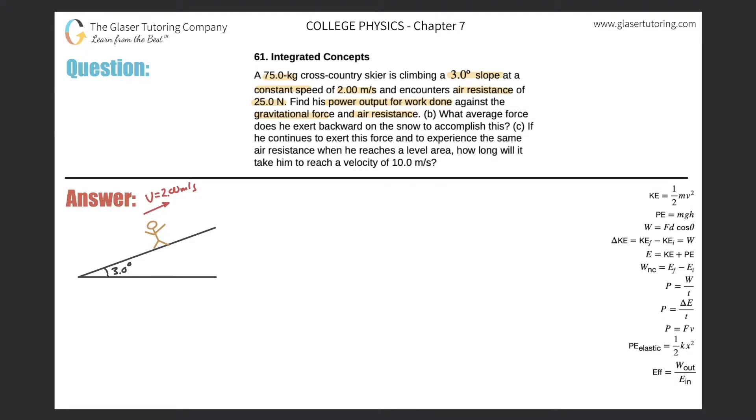Alright. So here's our skier. He or she is going up a three degree slope. The velocity is two meters per second, but it is constant and therefore the acceleration is zero. So that might be important. And we need to find the power output for work done against the gravitational force and air resistance.